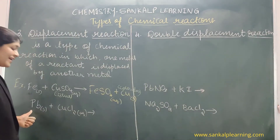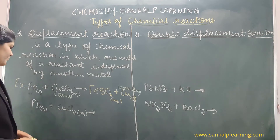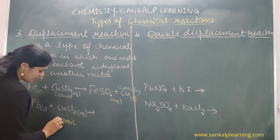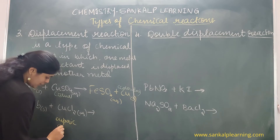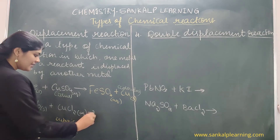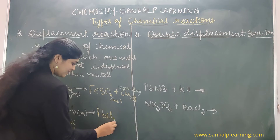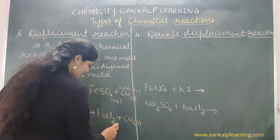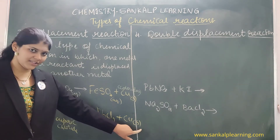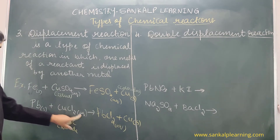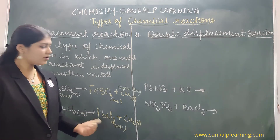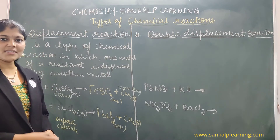The second example: when lead (Pb) reacts with cupric chloride — note that Cu⁺¹ is cuprous and Cu⁺² is cupric — there is formation of lead chloride, PbCl2, and copper solid. Cupric chloride was in aqueous solution. Lead displaces copper; lead comes in the place of copper to form lead chloride. This is another example of a displacement reaction.